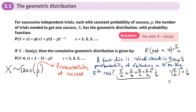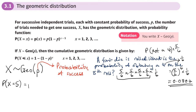Working this out on the calculator: five over six to the power of four, times one over six. To three significant figures, that gives 0.0804. So what we were doing was saying: what is the probability of success occurring on the fifth turn?